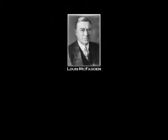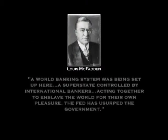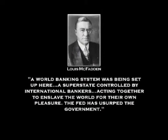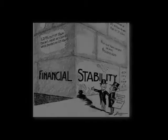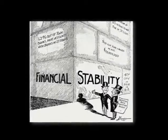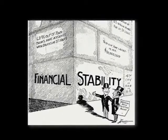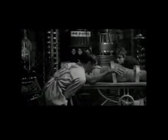Congressman Lewis McFadden also expressed the truth after the passage of the bill: "A world banking system was being set up here — a super state controlled by international bankers, acting together to enslave the world for their own pleasure. The Fed has usurped the government." Now, the public was told that the Federal Reserve System was an economic stabilizer, and inflation and economic crises were a thing of the past. As history has shown, nothing is further from the truth. The fact is, the international bankers now had a streamlined machine to expand their personal ambitions.